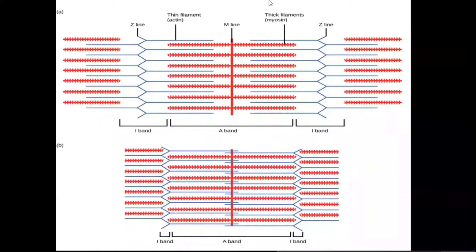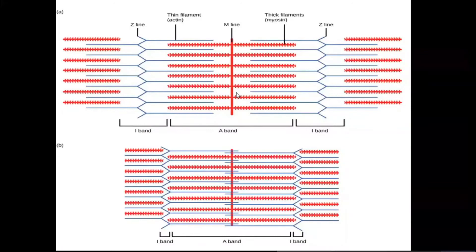Thin filaments are composed of the protein actin. The overlapping of thin and thick filaments and the narrowing of the M-line within the A-band represents contraction. The A-band contains both thick and thin filaments, while the I-band (isotropic band) bounded by the Z-line contains only actin filaments.